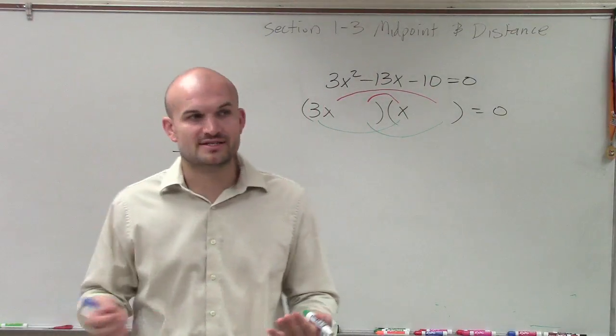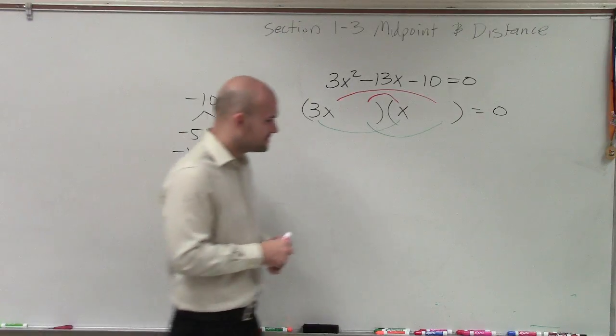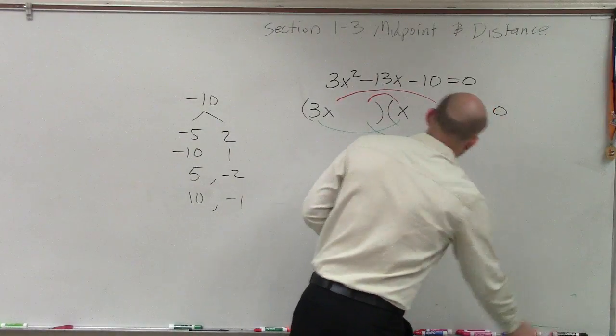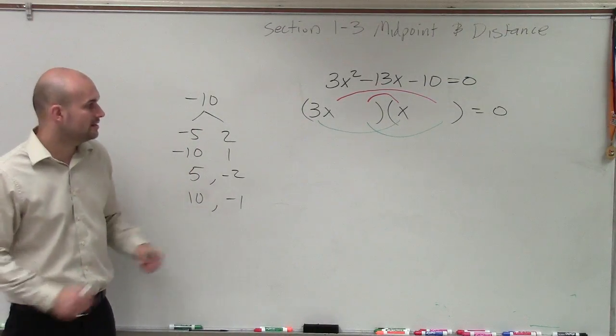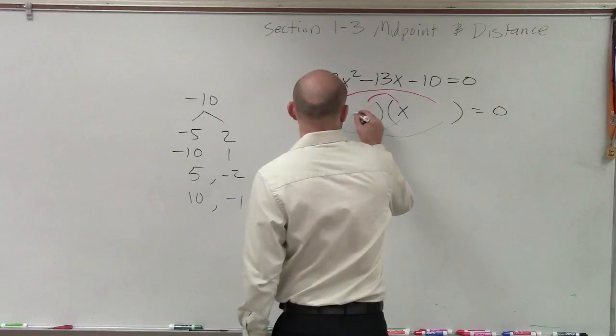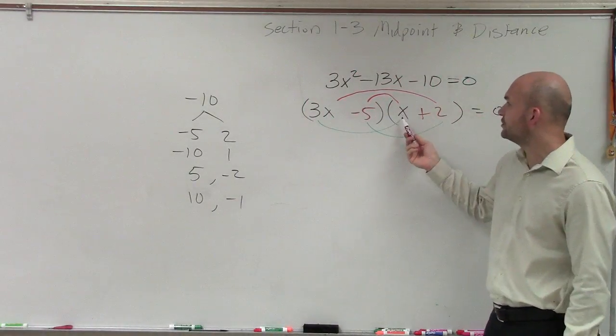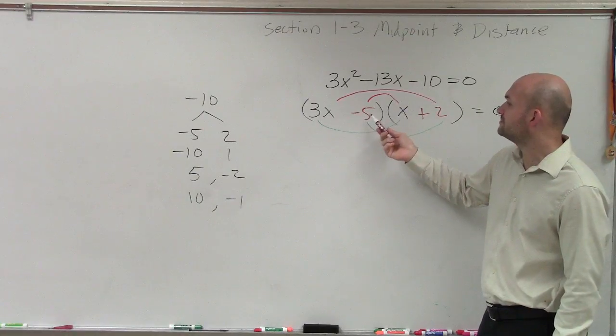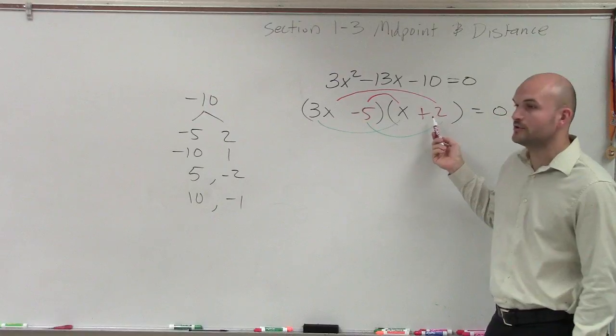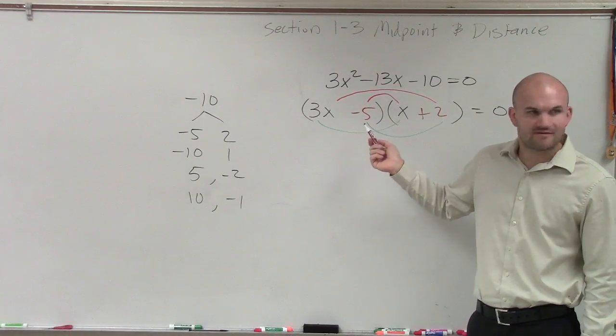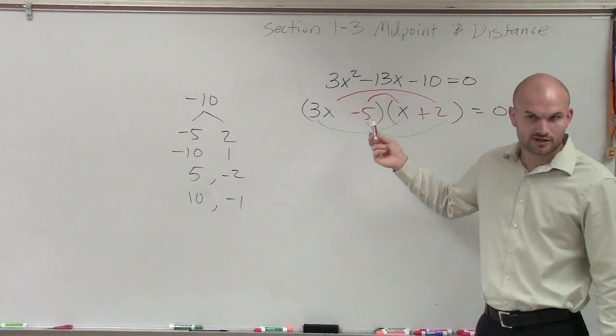So we can do a little bit of this in our head and just kind of do some guess and check. So what I would do is you can just kind of work down the list if you want to. And just by saying, what about if I did negative 5, positive 2? Well, negative 5 times x is a negative 5x, 3x times 2 is 6x, positive 6x minus 5x is just 1x. We need to get to negative 13x, right? So that's not the correct way.